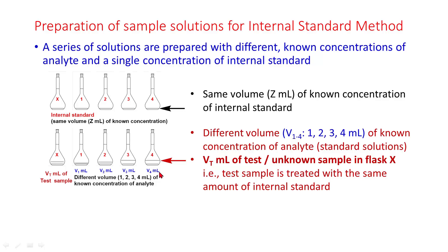V4 ml of known concentration of analyte — that is, standard solution — are taken in flasks 1, 2, 3, 4. In the flask labeled X, Vt ml of test sample is taken; that is, the test sample is treated with the same amount of internal standard.